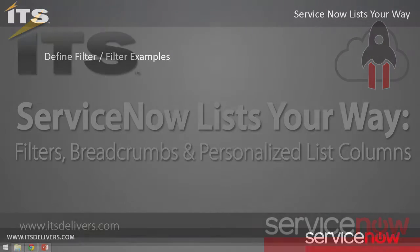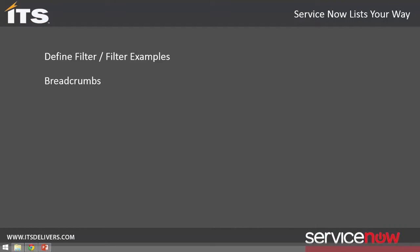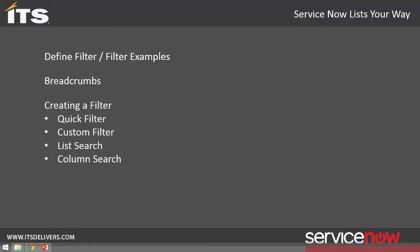We'll first look at defining filters and some filter examples. Then we'll look at the breadcrumbs display and how you can interact with the breadcrumbs. We'll look at creating a filter through several filter methods: quick filters, custom filters, and two methods for searching. We'll look at saving a filter so that you can reuse filters you've created. And finally, we'll look at personalizing the list columns so that you can see more data on the list than is there by default.